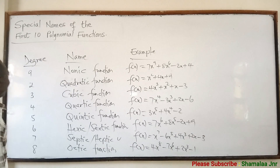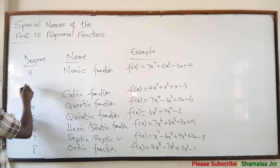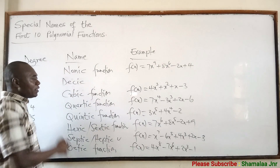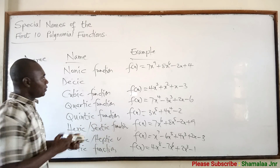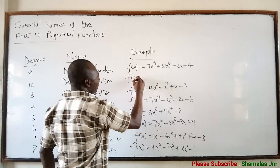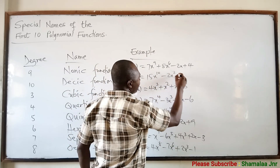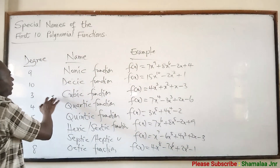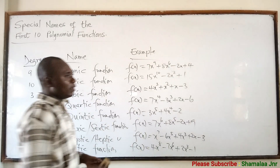And lastly, when the degree is 10, then we say it is a decic function. For example, L(x) = 15x¹⁰ − 2x + 1. This is a decic function. You have to keep practicing with some of these names.